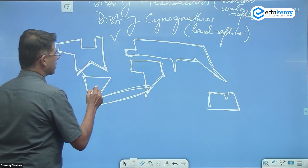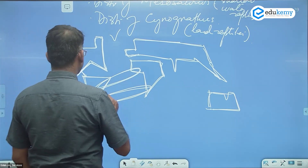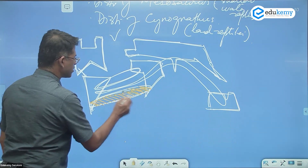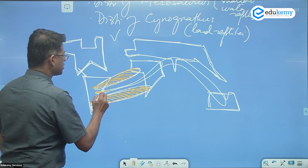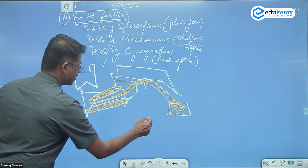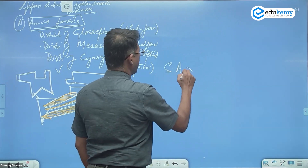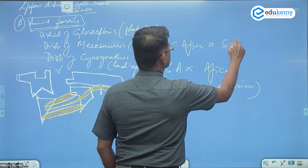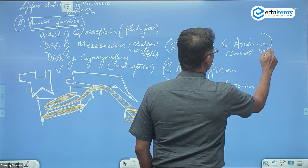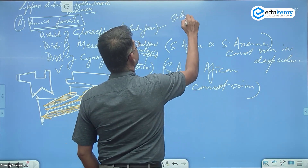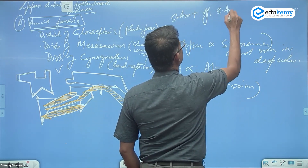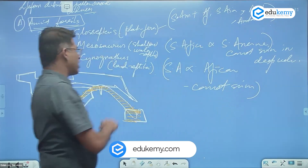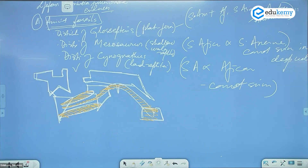On your representative map, show that Mesosaurus is found in this area, Cynognathus in this area, and Glossopteris distributed right across. Specifically: Cynognathus is found in South America and Africa — it cannot swim. Mesosaurus is found in southern Africa and southern South America — it also cannot swim in deep waters. Glossopteris is found in South America, Africa, South Asia, Australia, and Antarctica — and it is a plant-like organism.